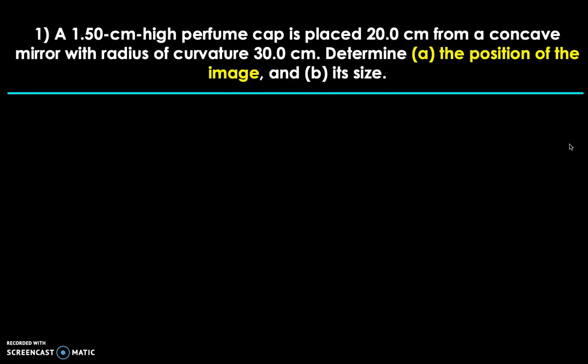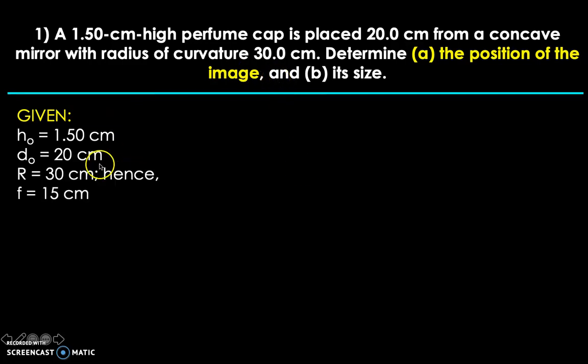So just like any other physics problem, the first thing we're going to do is to write down the given. So the height of the object is 1.50 centimeters based on the problem. And because it is placed 20 centimeter from a concave mirror, 20 centimeter would be the object distance or the distance of the object away from the mirror. Next, we have the radius of curvature which is 30 centimeter. And we will retain the positive sign because it's a concave mirror. And radius of curvature is positive if you have a concave mirror.